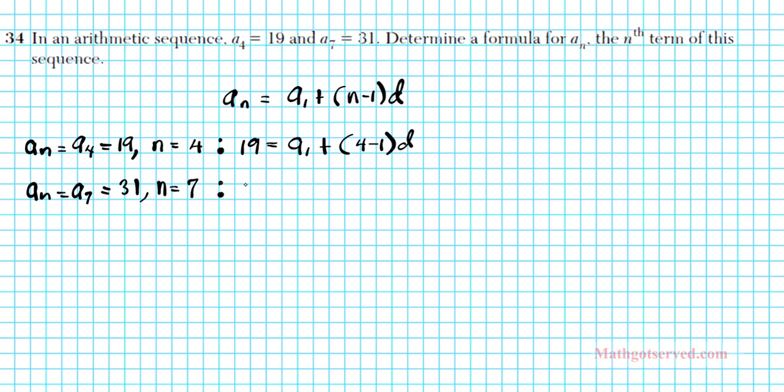In a7 equals 31, an is going to be a7, which is 31, and we also know that n is equal to 7. With these pieces of information, we can also generate another equation. That equation is a7, 31, is equal to a1 plus the quantity 7 minus 1 times d.